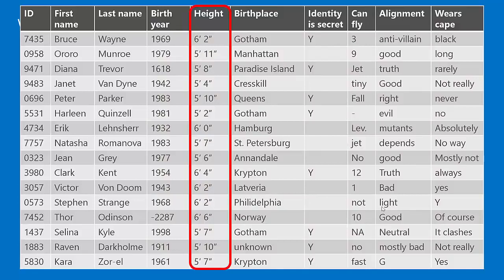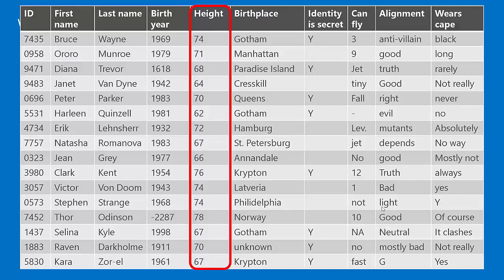Next we look at height — nice, easy to interpret, uniformly formatted. The difficulty is we know height is numerical: 61 is much closer to 62 than to 51. That's not represented when the values are strings with foot and inch tick marks. So we need to change them to a numerical form — once converted to inches, they're naturally interpretable by the algorithm.